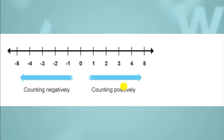Here you can see in the number line that we have 0 in the middle. And as we move towards the right side of 0 in an ascending order, we are counting positively. You can see we are having numbers 1, 2, 3, 4, 5. And as you can see, we are not having any signs written with these numbers, so they are absolutely positive.